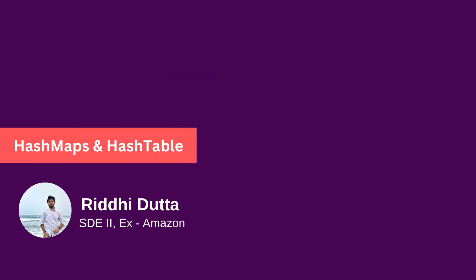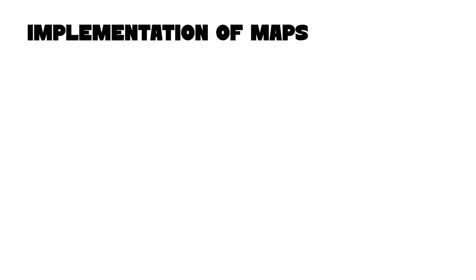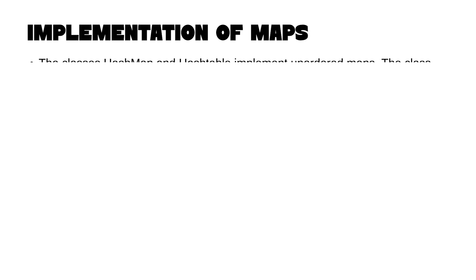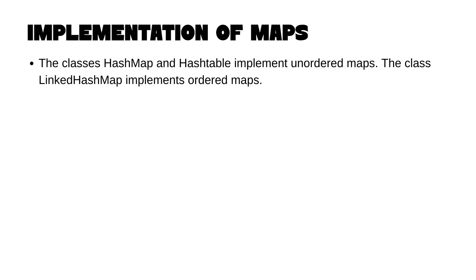Let's look at the implementations of a map. A map is very analogous to a set in terms of classes and implementations. The classes HashMap and HashTable implement unordered maps, while the class LinkedHashMap implements ordered maps.